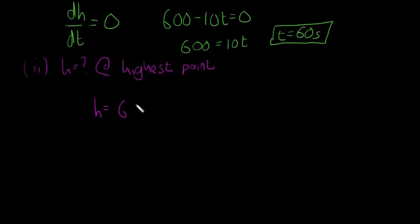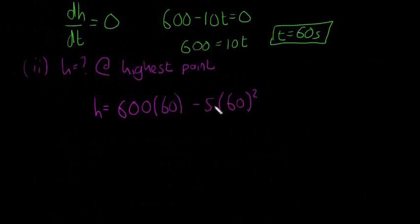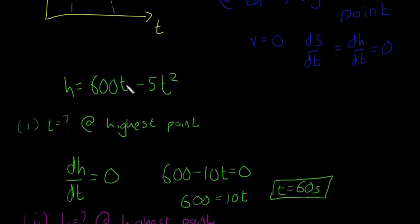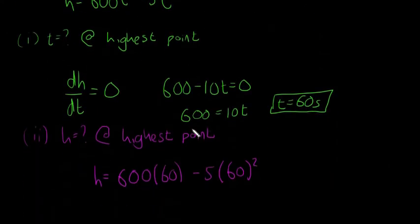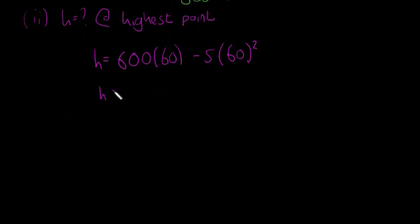So I'm going to say that h is equal to 600 by 60 minus 5 by 60 squared. So wherever there is a t, we're going to stick in our value for t, which is 60, and we're going to find h. So at the highest point, h ends up being 18,000 meters.